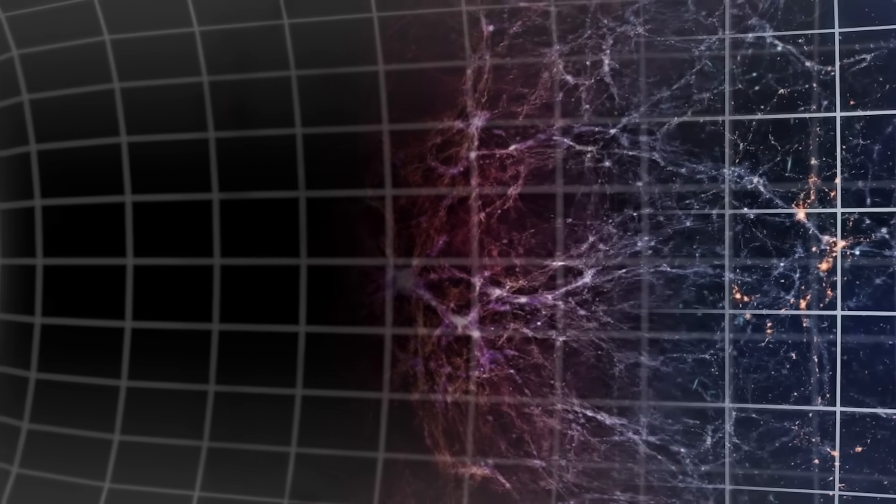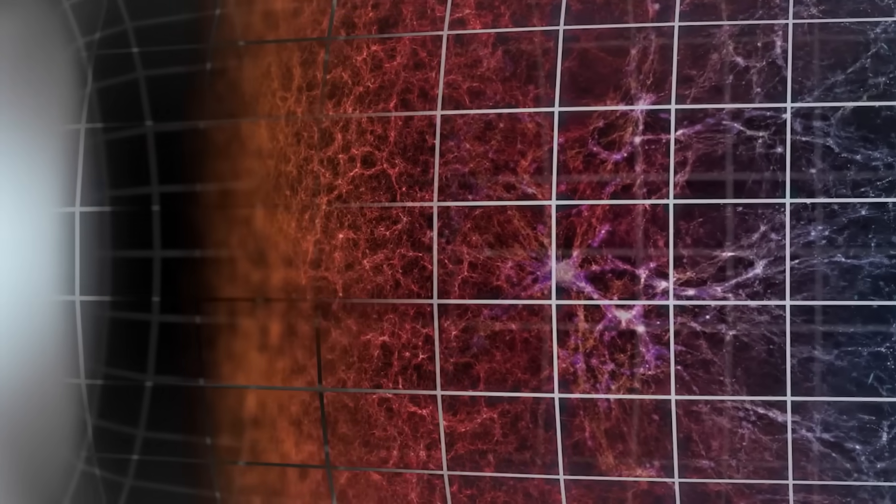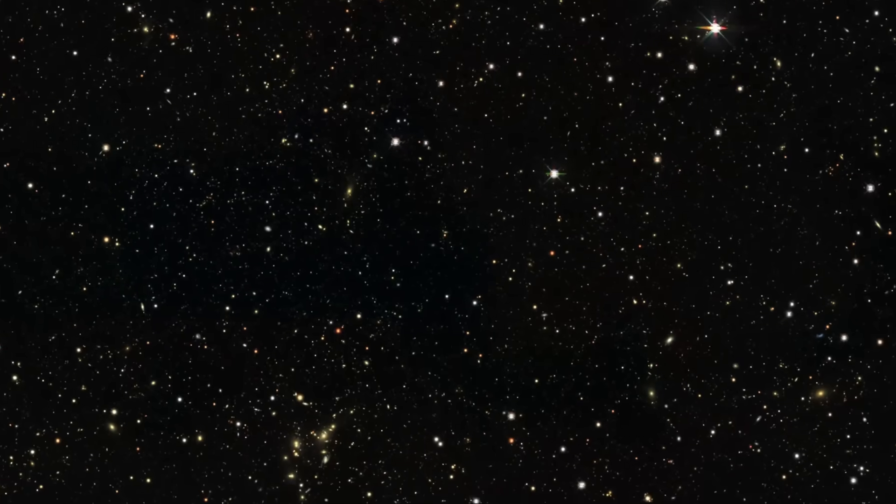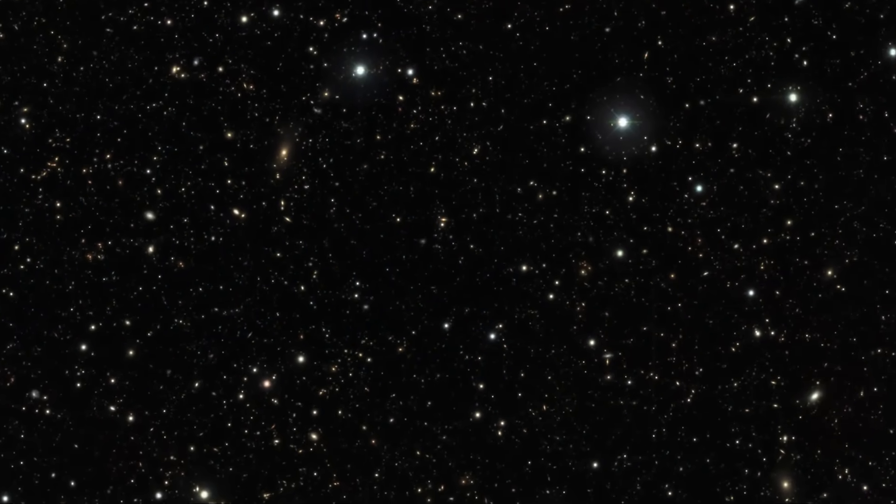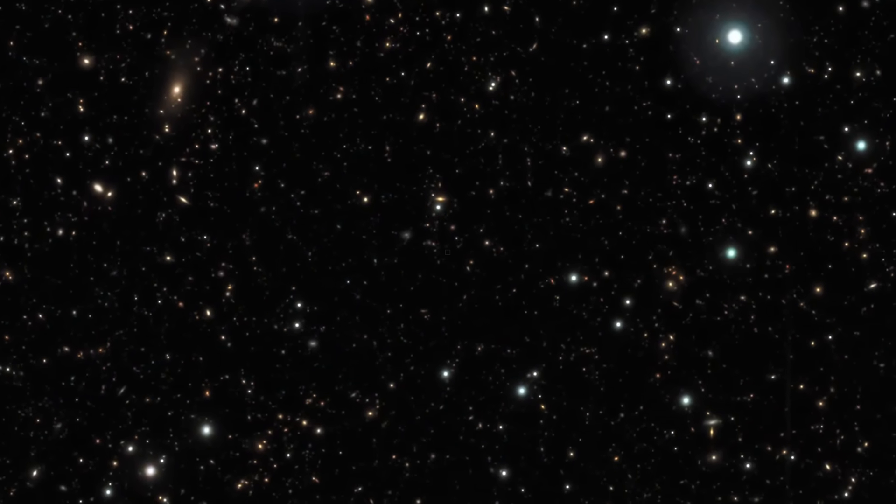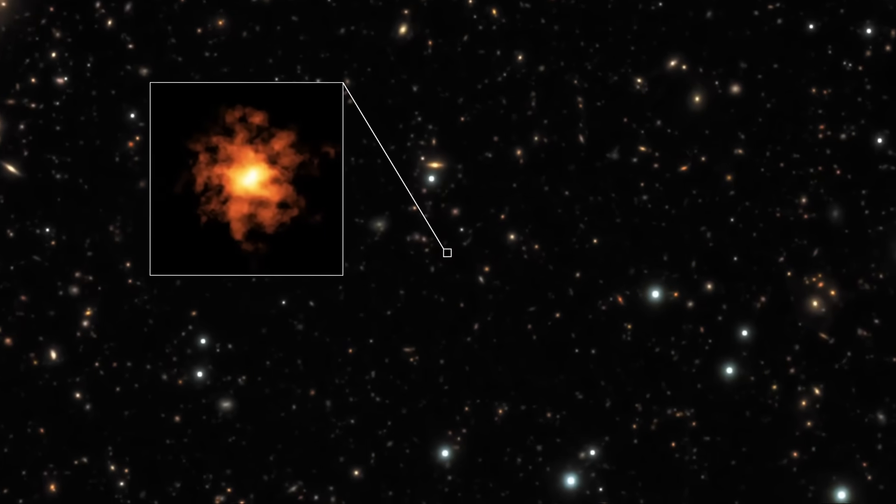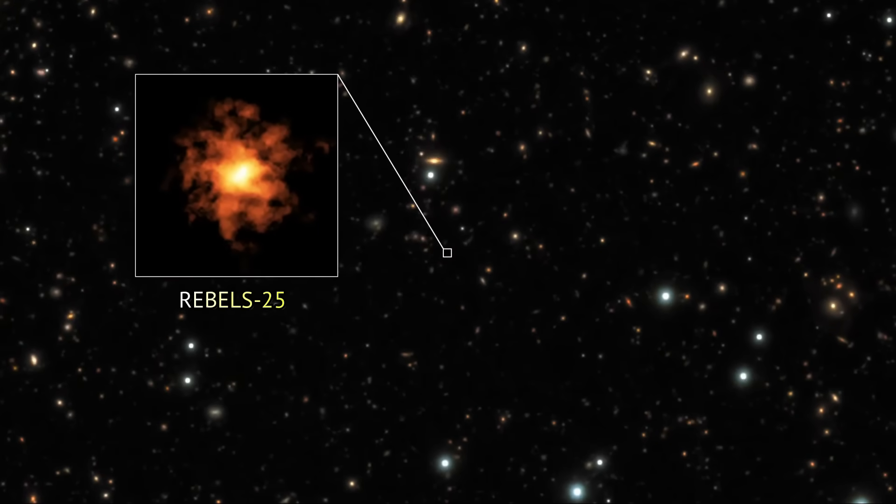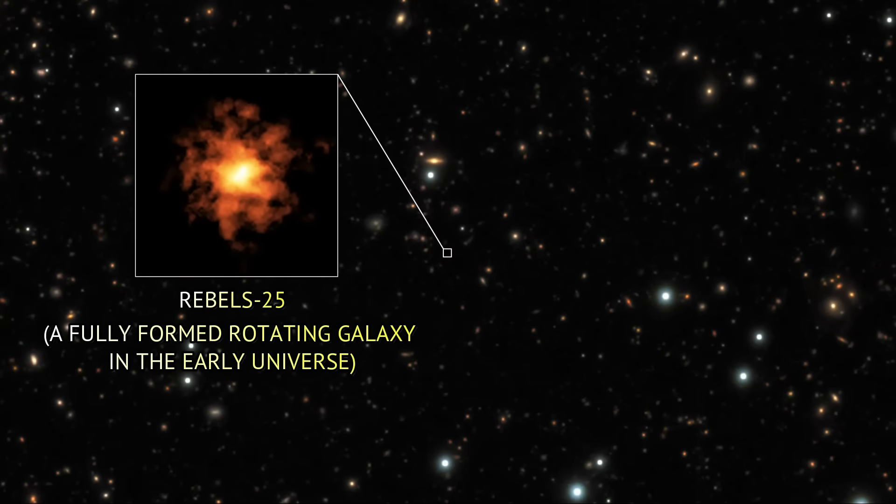The standard model predicts that galaxies at this stage should be small and irregular. Instead, Webb has found massive, well-formed galaxies with significant structure. And their presence have led scientists to rethink our understanding of the universe.